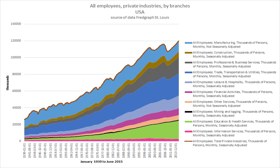For purposes of U.S. Federal Income Tax Withholding, 26 U.S.C. § 3401 provides a definition for the term 'employee,' specific to Chapter 24 of the Internal Revenue Code. For purposes of this chapter, the term 'employee' includes an officer, employee, or elected official of the United States, a state, or any political subdivision thereof, or the District of Columbia, or any agency or instrumentality of any one or more of the foregoing. The term 'employee' also includes an officer of a corporation.